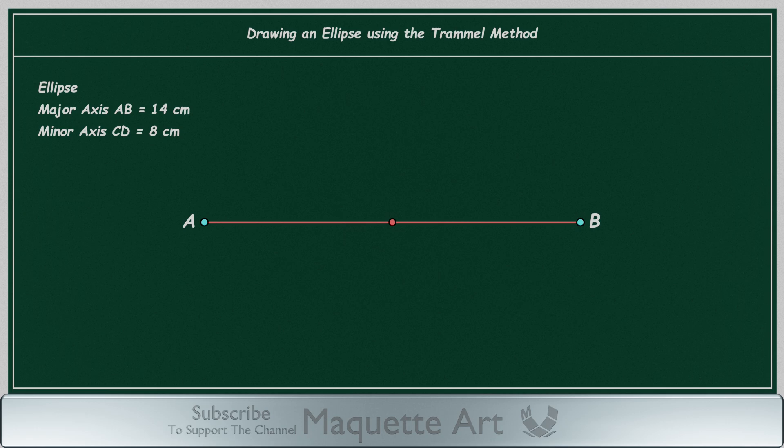Then, in the middle of the major axis, draw the minor axis of length 8 cm, perpendicular to the major axis.